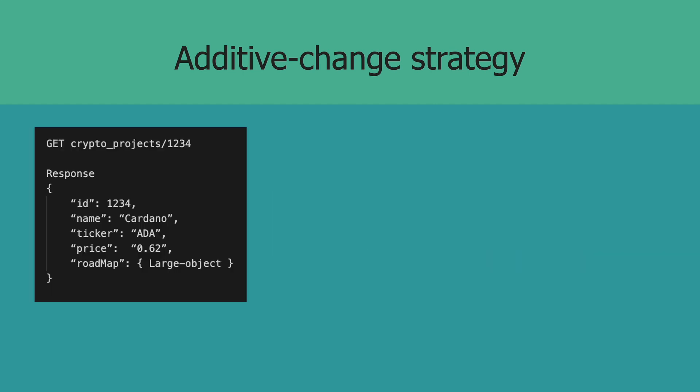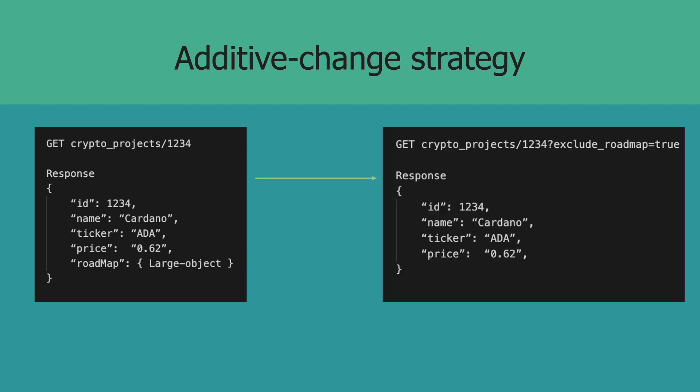For example, let's say you have the following response in our fictitious crypto API. When you first released the project, you thought it was a good idea to include the roadmap data of your project. After several complaints from consumers that they don't always need the roadmap data and it's just adding to the network load, you've decided to remove it. With the additive change strategy, you can't simply get rid of it — you still may have a few clients using this data. However, we can remove it as long as users opt into this change. So we can add a query parameter to get the users to consent — notice how we include the 'exclude_roadmap=true' query parameter to indicate that we want to use the newest version of this API that excludes roadmap data. That way, we are solving this problem for the ones who have the issues, but we're not breaking it for the ones that don't.